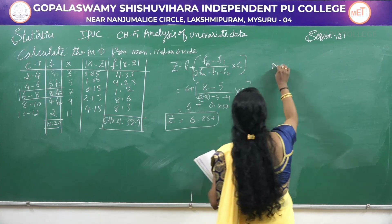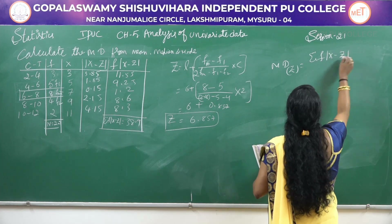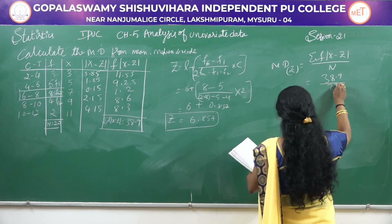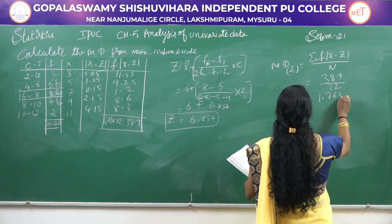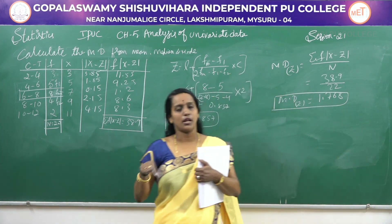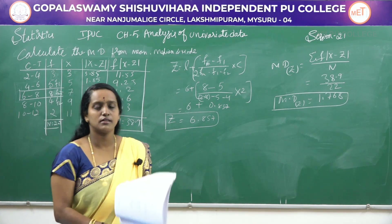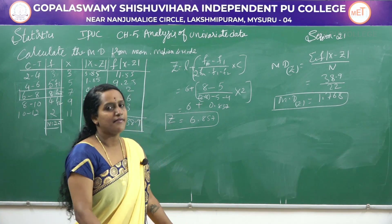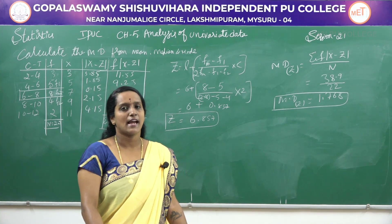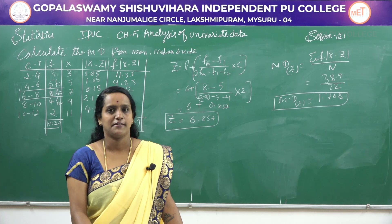Now find mean deviation using mode: Σf|x − Z| / N = 38.9 / 22 = 1.768. This is mean deviation using mode. Whatever deviation you take, there is only a small difference in the mean deviation values. This is how we solve problems on this topic. In exams, you may get any one of the three methods — from mean, median, or mode. It is a very important topic. Thank you.